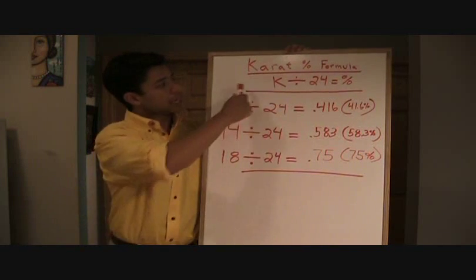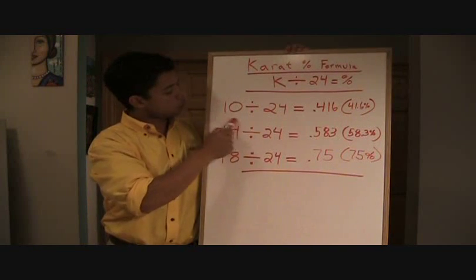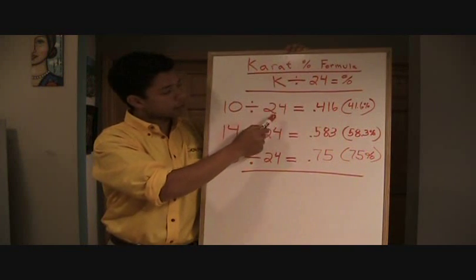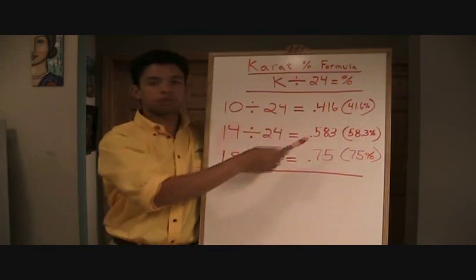Once again, it's our carat percentage formula. It's always the carat quality of the jewelry you have divided by 24 equals your percentage purity.